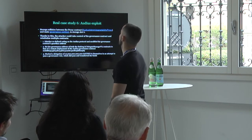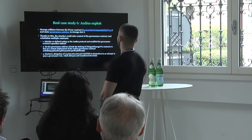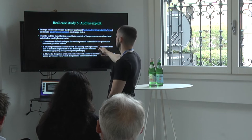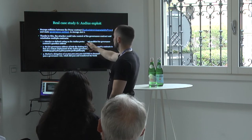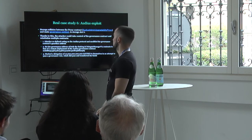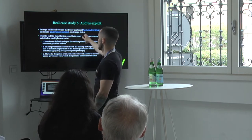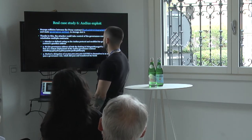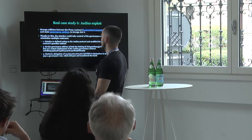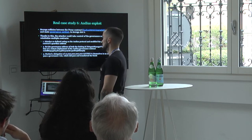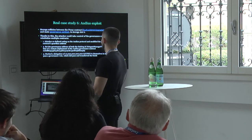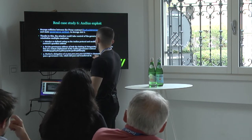In the Audius exploit, there was a storage collision between the proxy contract and the governance implementation contract at storage slot zero. The attacker, thanks to this collision, could reinitialize the contract with the address and parameters of their choosing. Using that capability, they were able to exploit the protocol — passing a governance vote and transferring all funds to themselves.